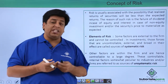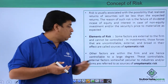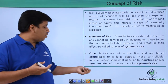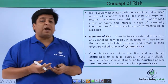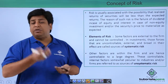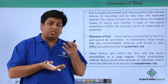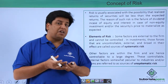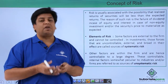What about unsystematic risk? Other factors are within the firm and are hence controllable to a large degree — not absolutely, but to a large extent, yes. These controllable, internal factors, which are somewhat peculiar to specific industries or firms, are referred to as sources of unsystematic risk. Now we are going to dive into the broader subcategories of sources of systematic risk and sources of unsystematic risk, starting with the sources of systematic risk.